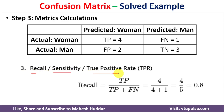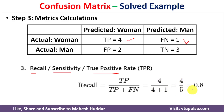Next we calculate recall, also called sensitivity or true positive rate. Recall is calculated as true positive divided by (true positive + false negative). True positive = 4 and false negative = 1, so 4 divided by (4 + 1) = 4/5 = 0.8.